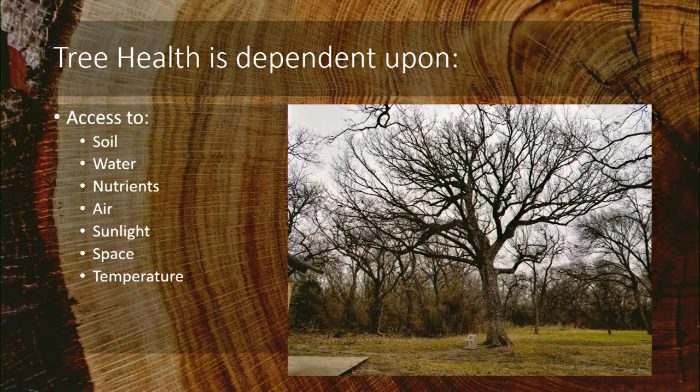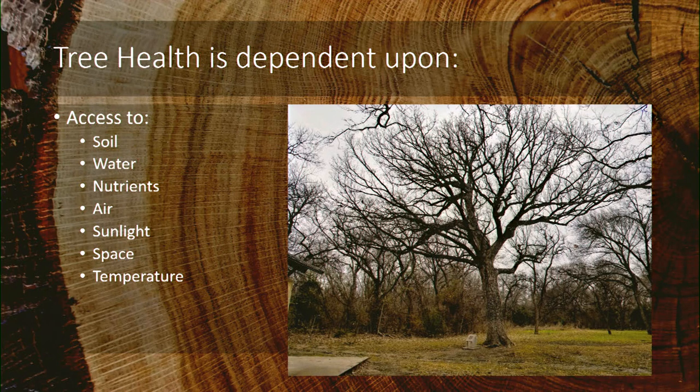Sunlight is important. Trees compete for light in our landscapes just as they did in forests. Some trees are adapted to shade, and we should realize that. For example, the Japanese maple is adapted as an understory tree and needs some shade, especially in the afternoon — we often see sun damage problems with those.